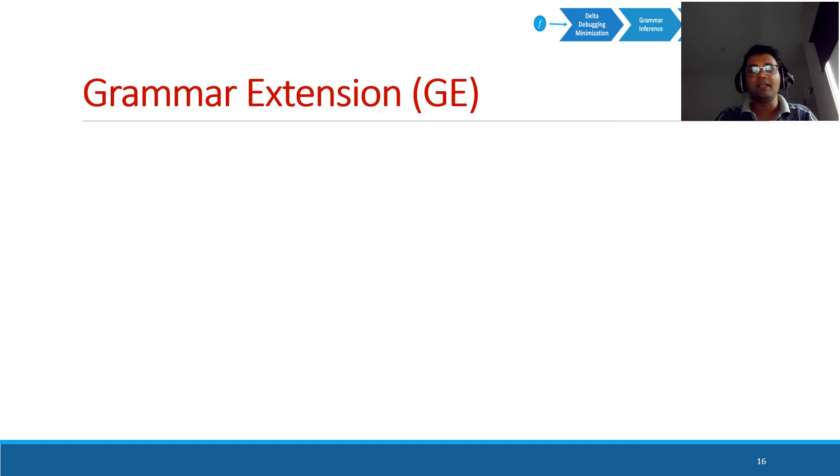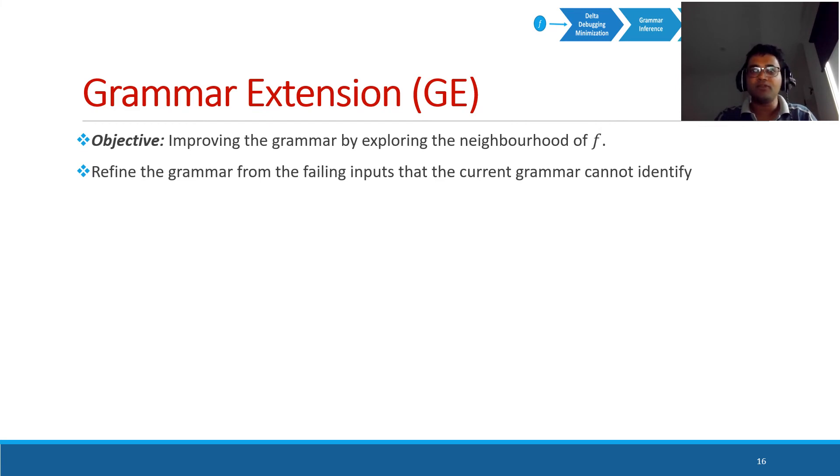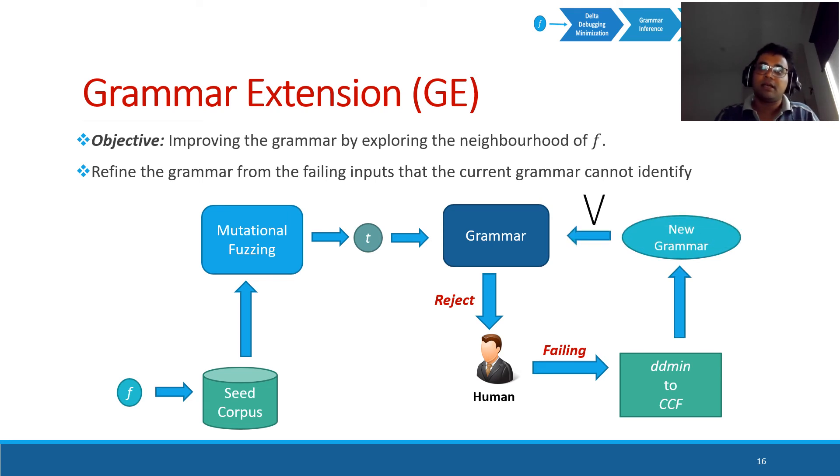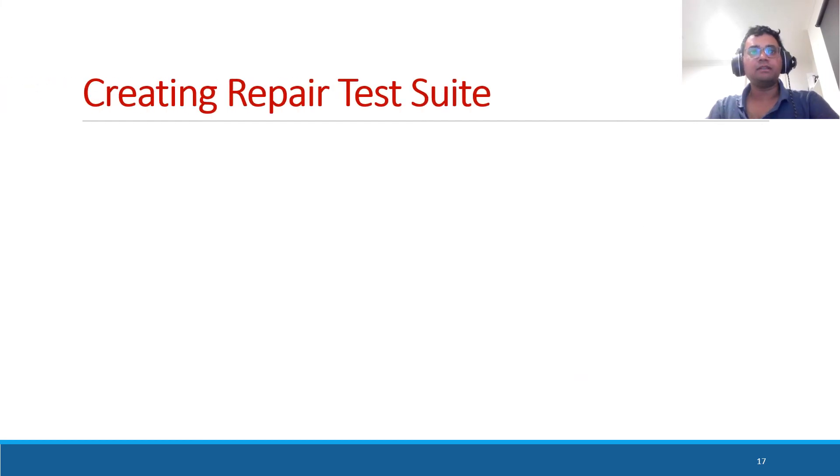The final step of Grammar2Fix is grammar extension. Here, we explore the neighborhood of the given failing input and we improve the grammar through that. Basically, we refine the grammar from the failing inputs that the current grammar cannot identify properly. We use mutational fuzzing for this neighborhood exploration. Once a test case is generated, we present it to the grammar. If the grammar rejects it, that means the grammar oracle predicts it as a passing test case. We present it to the human. If human says it is failing, it signals that the current grammar hasn't been trained properly to identify all the failing inputs. Then, we apply the ddmin to character class finding step in Grammar2Fix and the new grammar is generated and it is combined to the grammar with a disjunction. At the same time, the failing input is sent to the seed corpus.